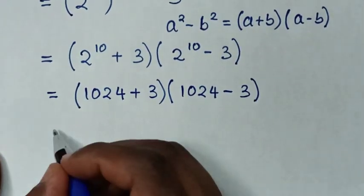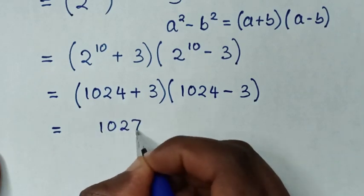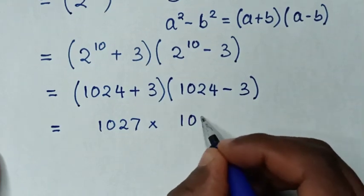Then it will be equal to 1027 times 1021.